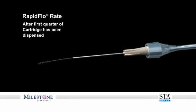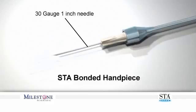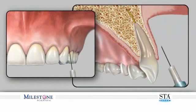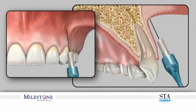It is important to remember that rapid flow is used during supraperiosteal buccal infiltration injections or mandibular blocks only after the first quarter cartridge has been dispensed and the patient has acknowledged that they have soft tissue anesthesia of the area being injected. To administer a supraperiosteal infiltration injection, we recommend the use of a 30-gauge, 1-inch needle. Topical anesthetic may be used if you or your patient desire.